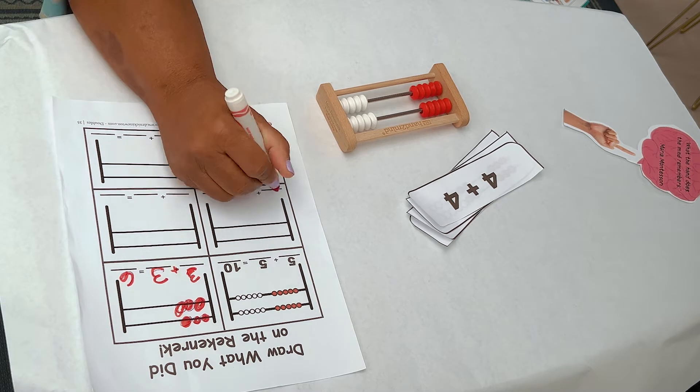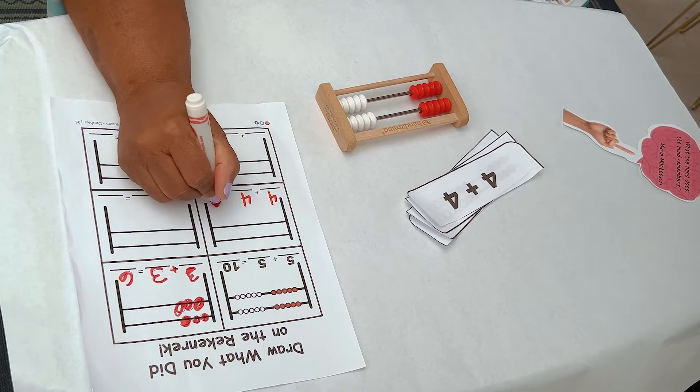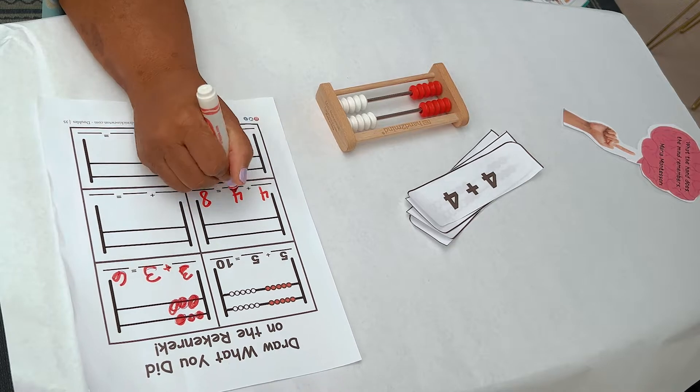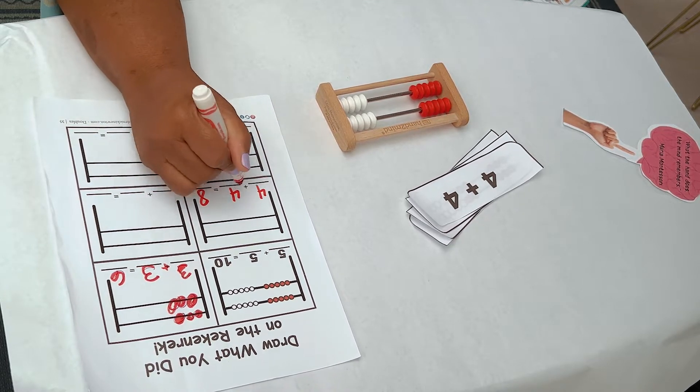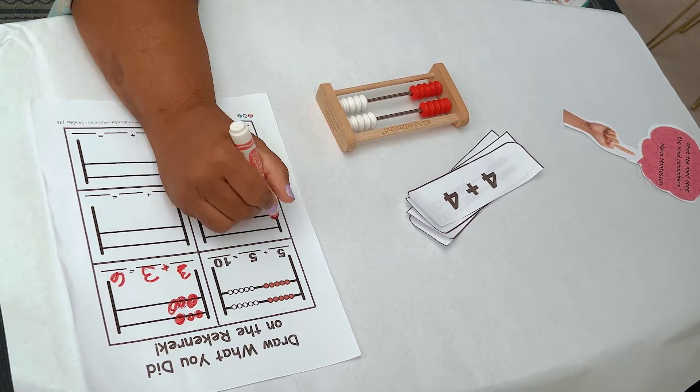I then write it. Four plus four make eight. Four plus four is eight. Four plus four is the same as eight. And I draw it.